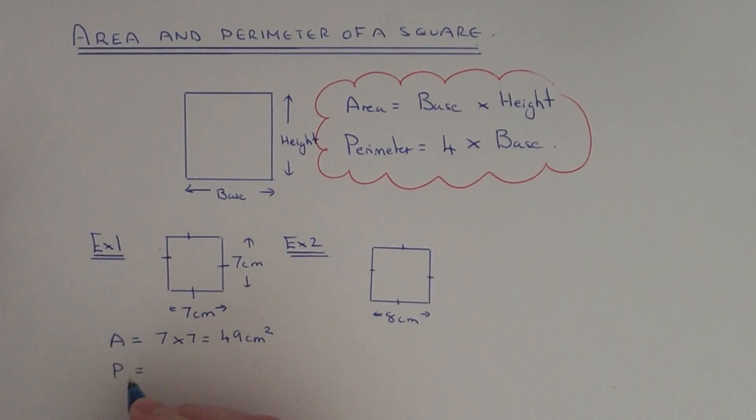To get the perimeter, it's the distance all the way around. So we can just do four lots of 7. So 4 times 7 is 28 centimeters.